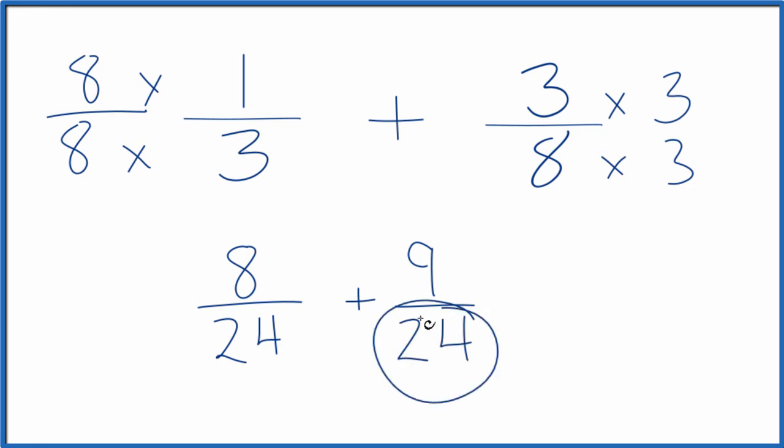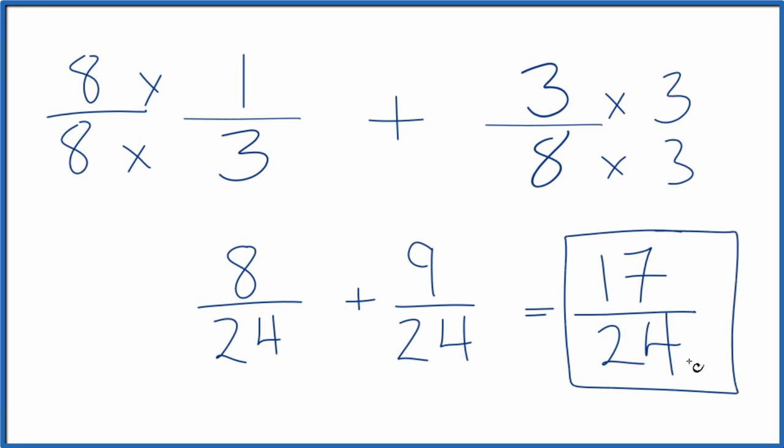So now we have the same denominator. Let's just add the numerators. 8 plus 9, that's 17. And then when we're adding fractions, if these are the same, we just move that over here and keep it as 24. And in answer to our question, 1/3 plus 3/8 is 17/24.